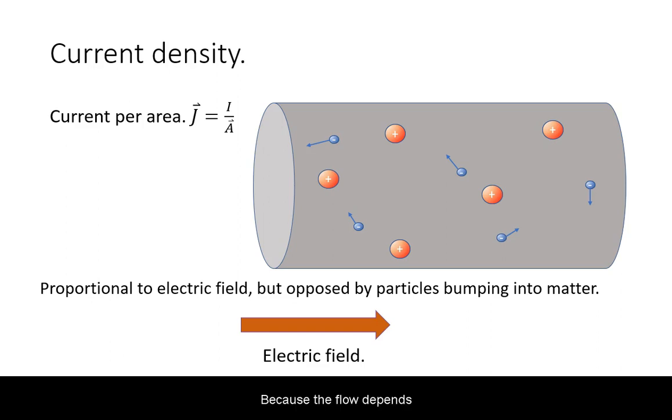Because the flow depends on number of interactions as well, we define current density as current per cross-sectional area along the flow. Current density is treated as a vector, and its direction is along the electric field along the conductor.